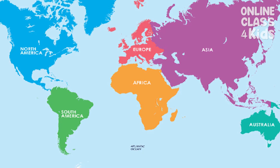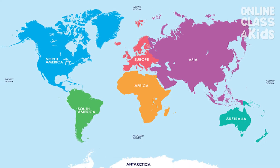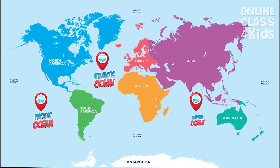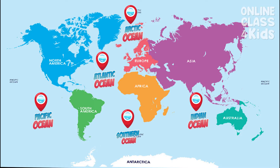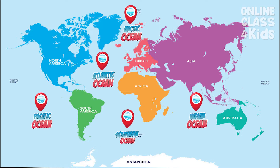There are five main oceans in the world: the Pacific Ocean, the Atlantic Ocean, the Indian Ocean, the Southern Ocean, and the Arctic Ocean. Each ocean is like its own special area with different animals and plants living there.